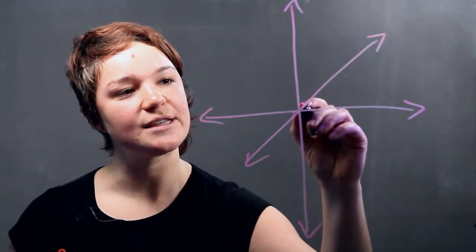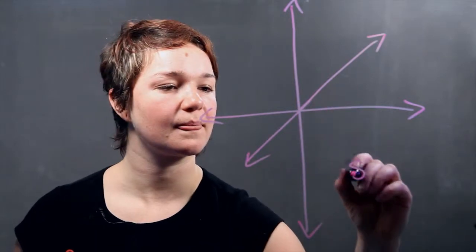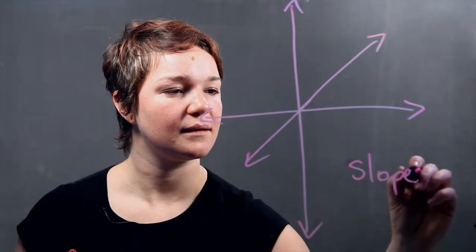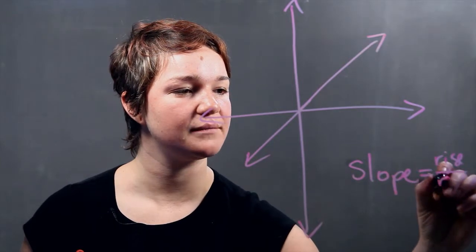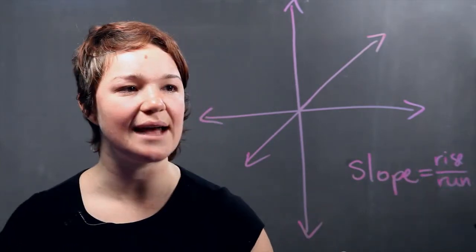So we know that the slope of the line is equal to the rise over run. Now what exactly does that mean?